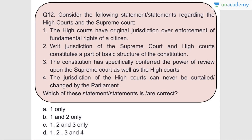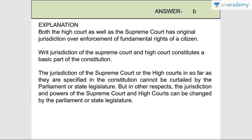Question number twelve: Consider the following statements regarding High Courts and Supreme Courts. Statement one - High Courts have original jurisdiction over enforcement of fundamental rights - correct. Statement two - the writ jurisdiction of the Supreme Court and High Courts constitutes part of the basic structure of the Constitution - correct. Statement three - the Constitution has specifically conferred the power of review upon both courts - assessed. Statement four - jurisdiction of High Courts can never be curtailed by Parliament - incorrect. Answer is B, one and two. The jurisdiction specified in the Constitution cannot be curtailed by Parliament or State Legislature, but in other respects jurisdiction and powers can be changed.